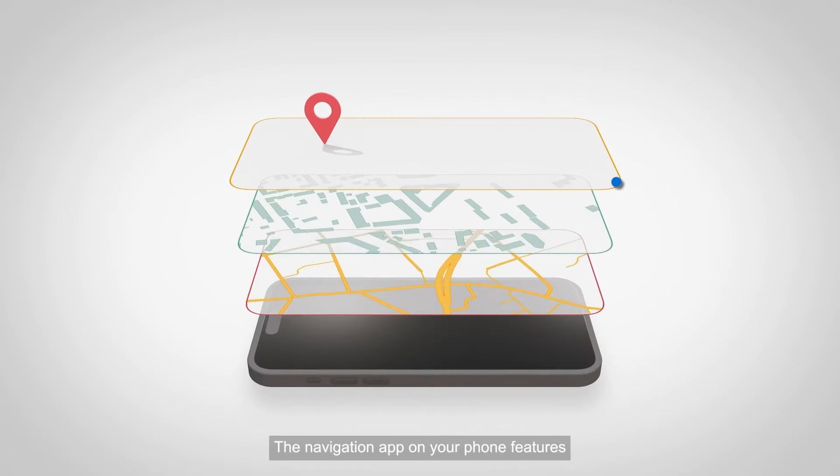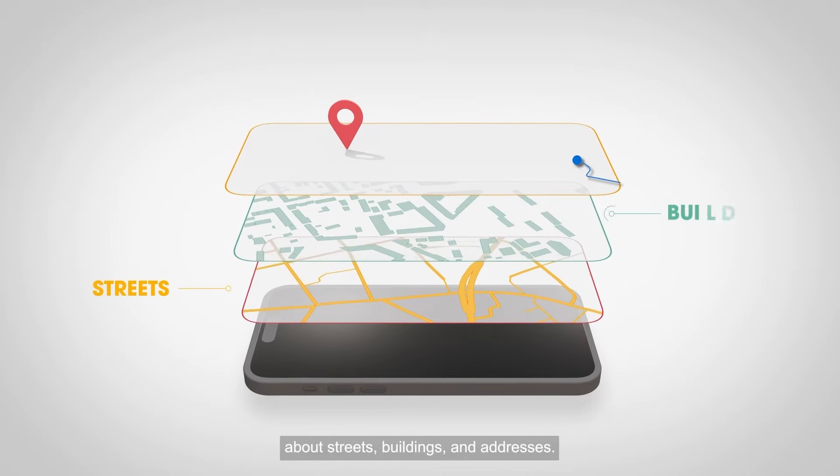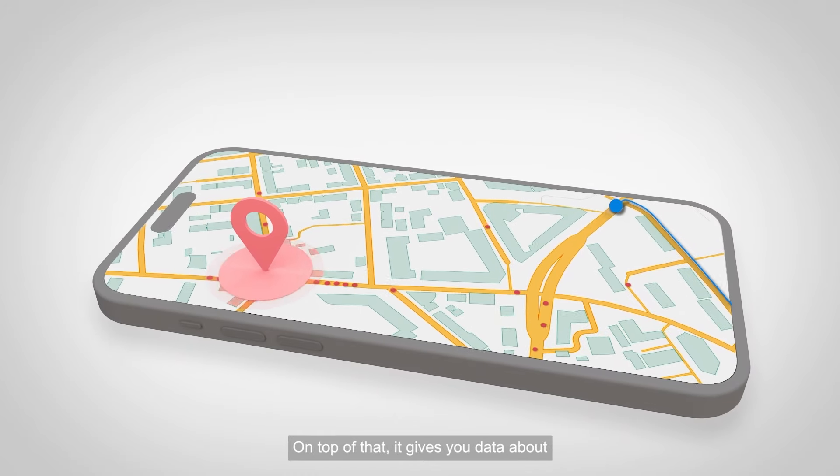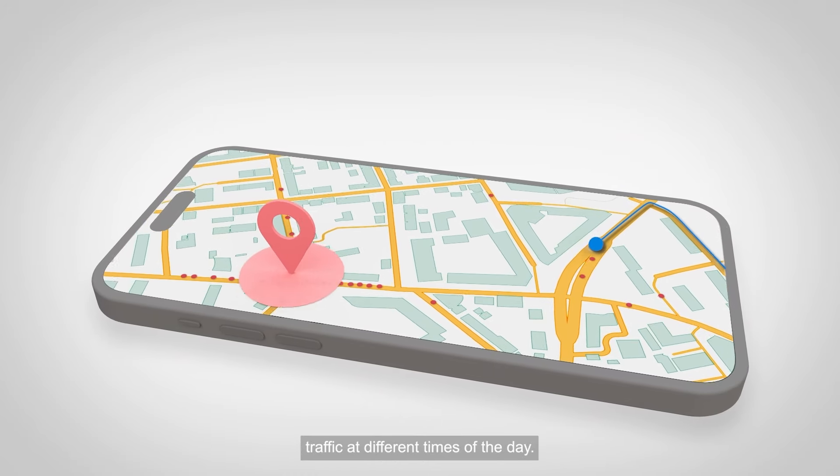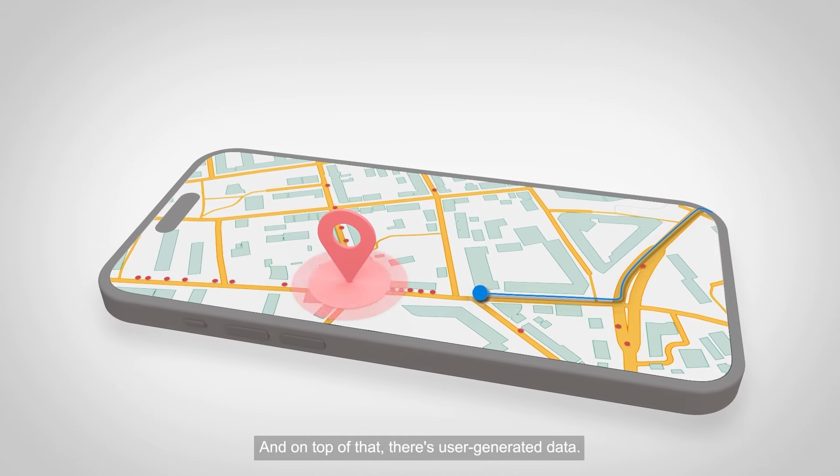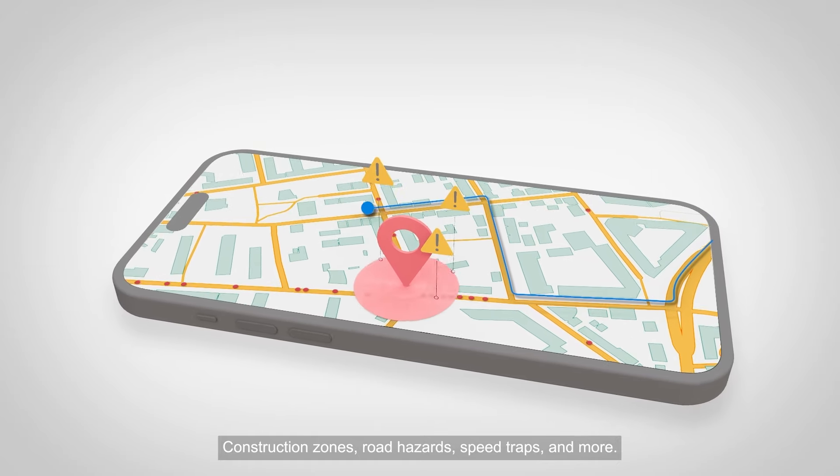The navigation app on your phone features multiple layers of pre-computed data about streets, buildings, and addresses. On top of that, it gives you data about traffic at different times of the day. And on top of that, there's user-generated data. Construction zones, road hazards, speed traps, and more.